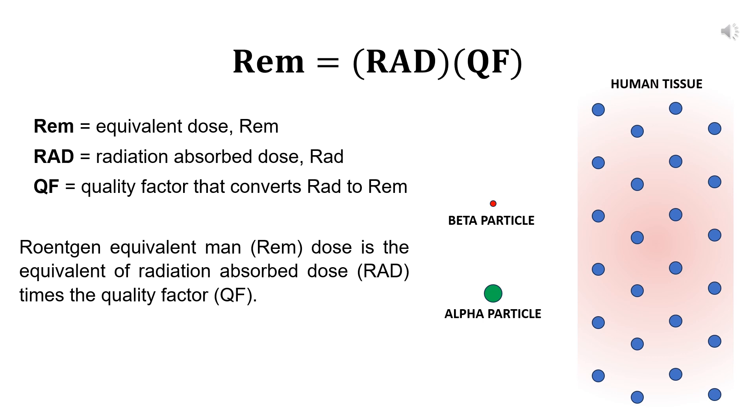The quality factor is very important because different types of radiations have different biological effects, even if they deliver the same amount of energy. For example, alpha particles are more damaging to biological tissue, especially if they are inhaled or ingested, than beta or gamma rays. That's why they have a higher quality factor. Remember, the REM is now being replaced by the sievert in the international system of units, where 1 sievert is equal to 100 REMs.